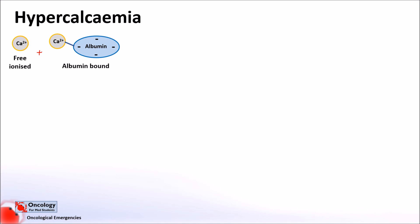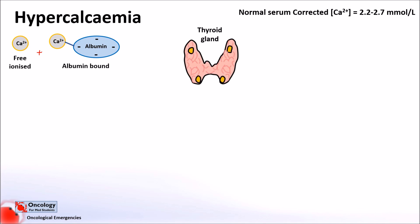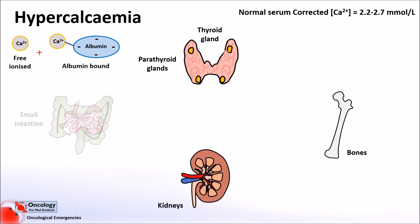Calcium levels in the blood are normally tightly regulated at around 2.2 to 2.7 millimoles per litre corrected. Hypercalcaemia can be defined as high levels of calcium in the blood. Definitions vary from laboratory to laboratory, but in general, serum levels of over 2.7 millimoles per litre are defined as hypercalcaemic. The main organs involved in the regulation of blood calcium levels are the thyroid gland, parathyroid glands — of which there are four that sit on the thyroid gland — bones, kidneys and the small intestine.